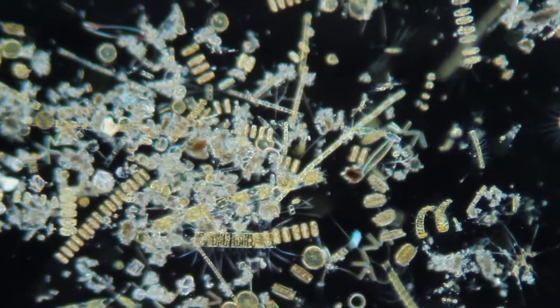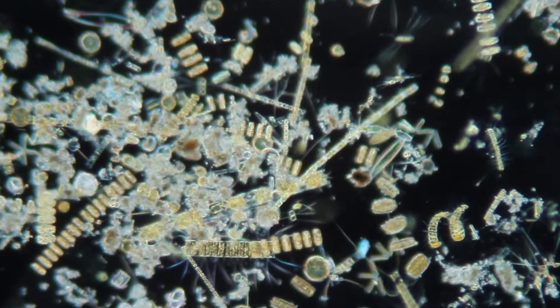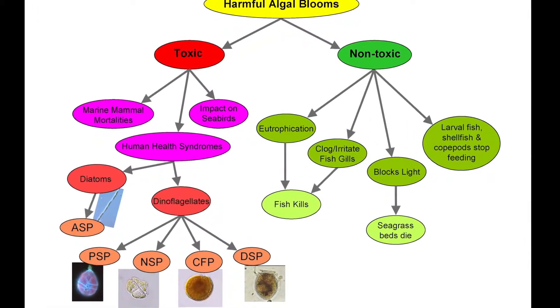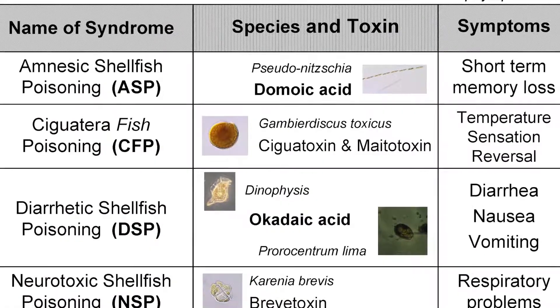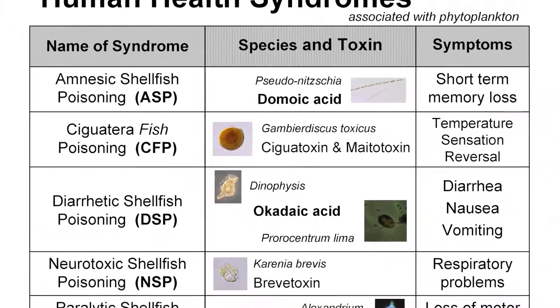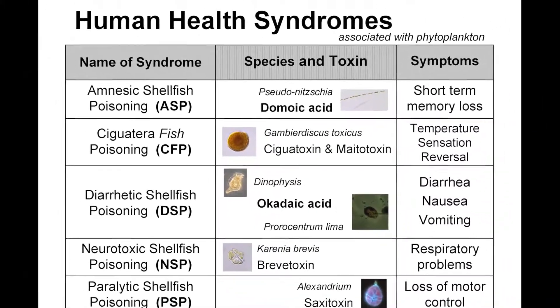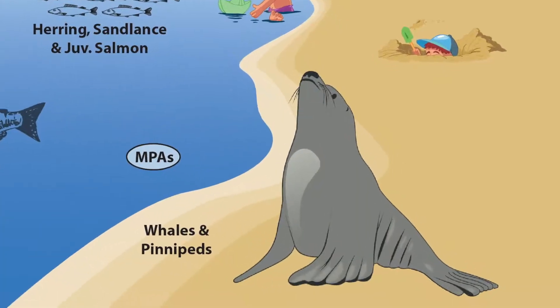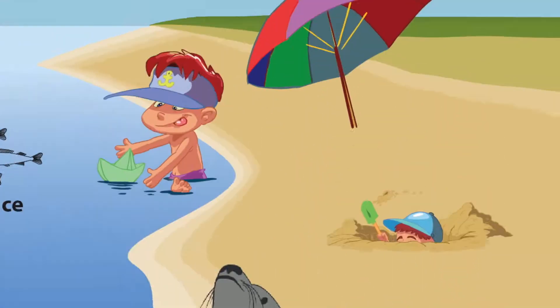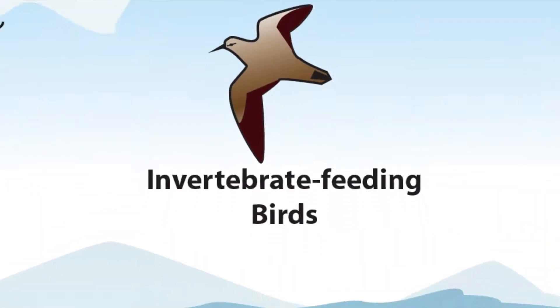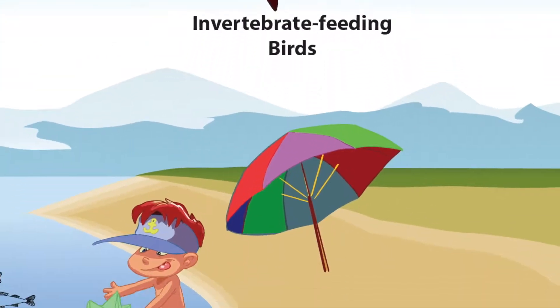Harmful algae are not necessarily toxic, although many of them do produce toxins causing various illnesses or death, impacting marine mammals, seabirds, and human health.